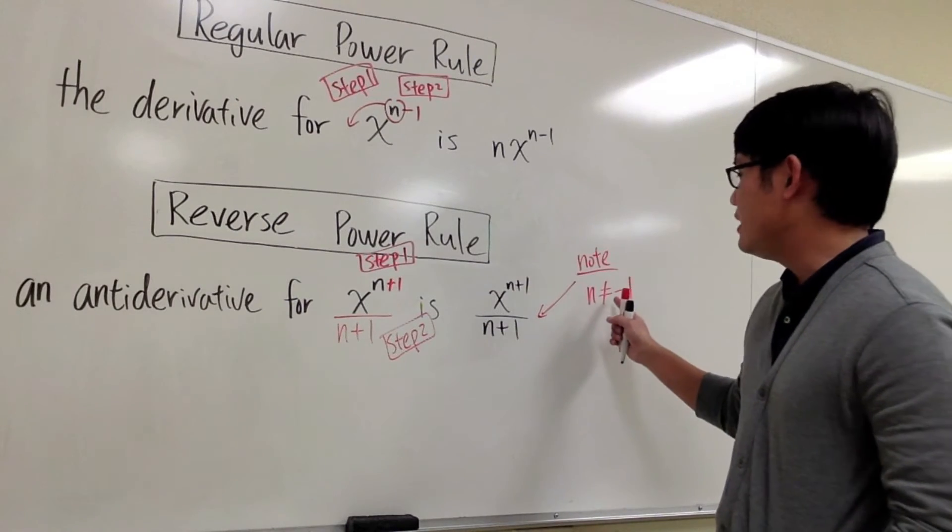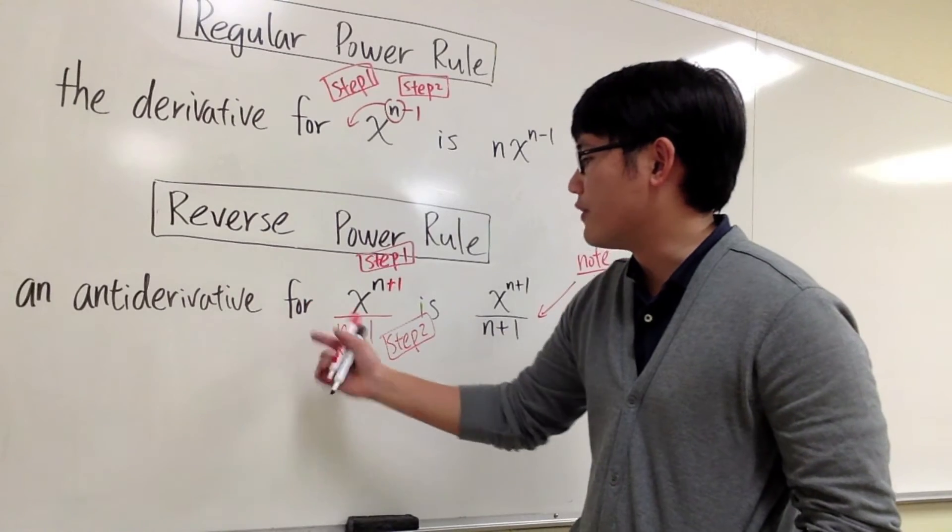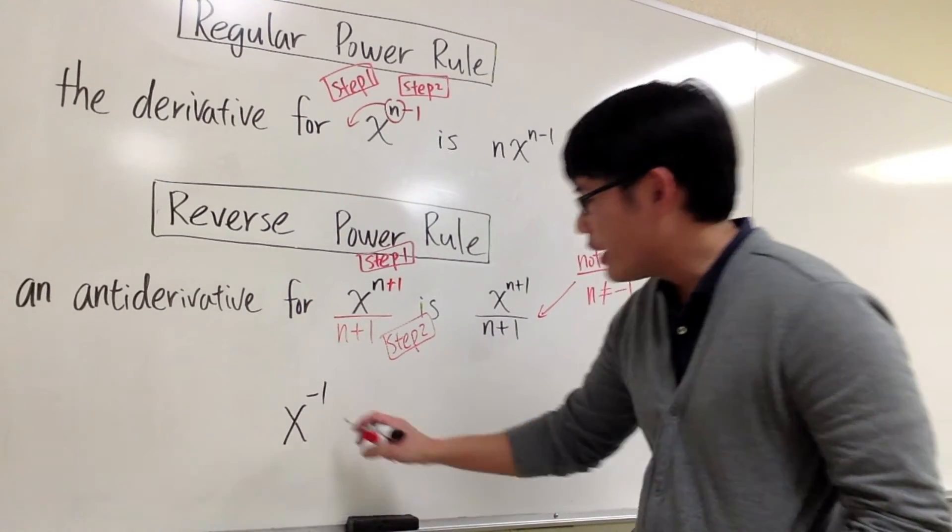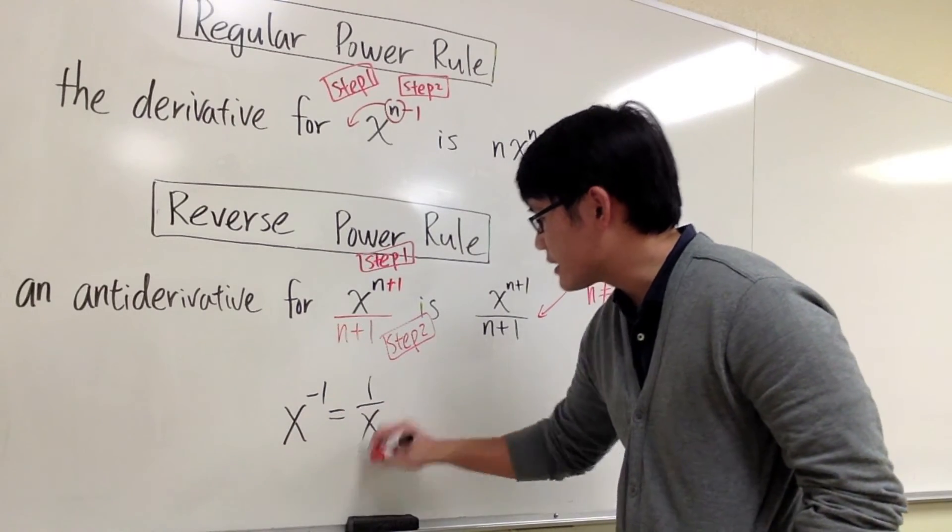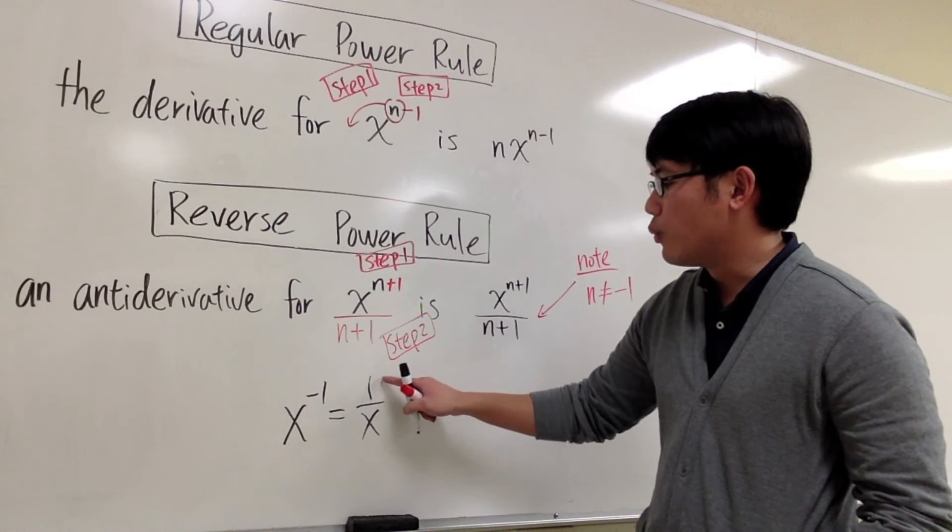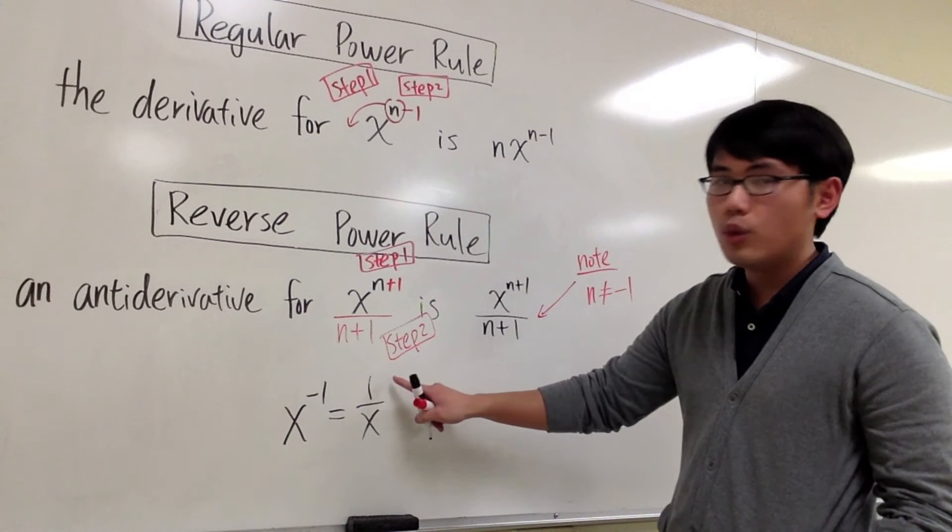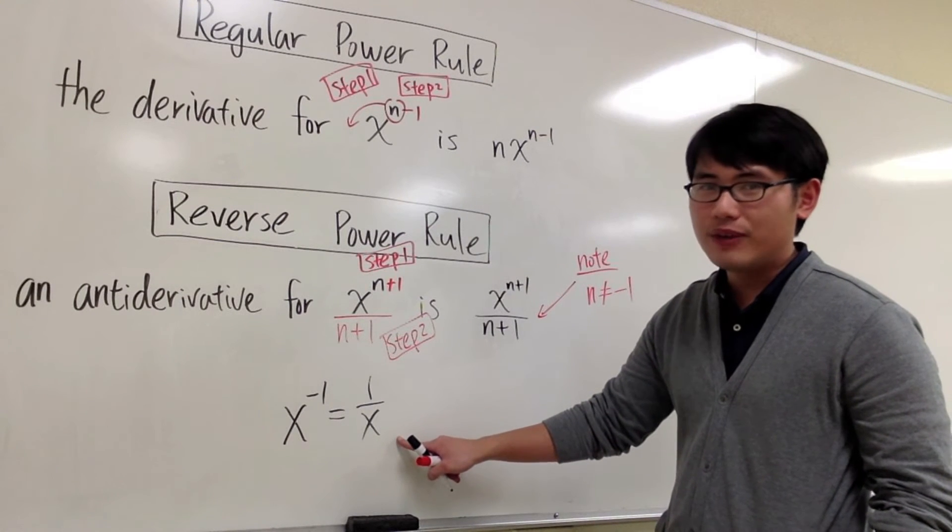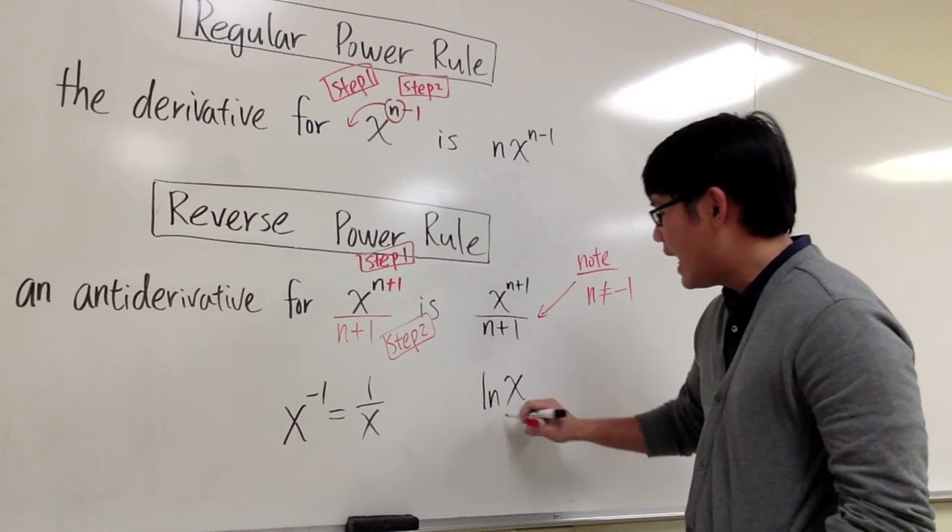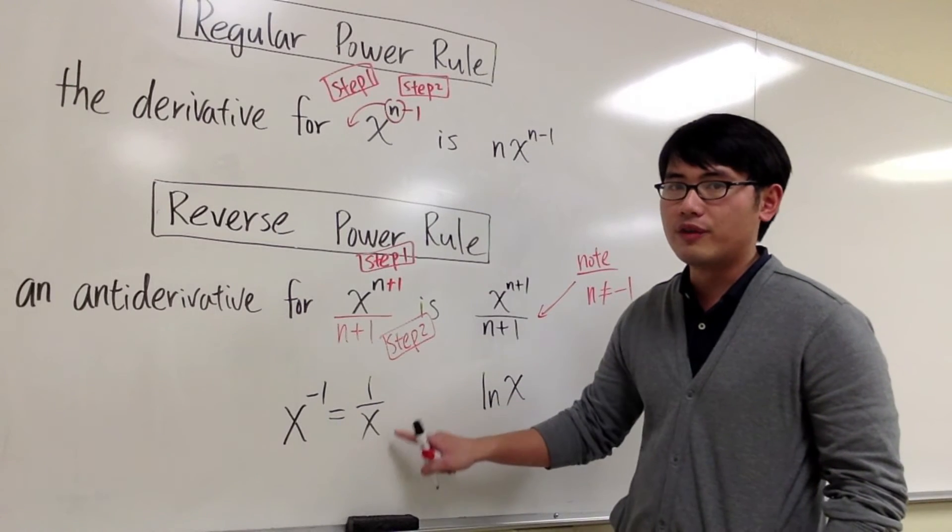But what happens if n is indeed equal to negative 1? Now, how are we going to find an anti-derivative for the function that's x to the negative 1? And by the way, this right here is the same as saying 1 over x. So to do this, to find an anti-derivative for 1 over x, you have to ask yourself, the derivative of what will give you 1 over x? And you have to know your derivative table really well. The answer for that is ln x, right? The derivative of ln x will give you 1 over x.